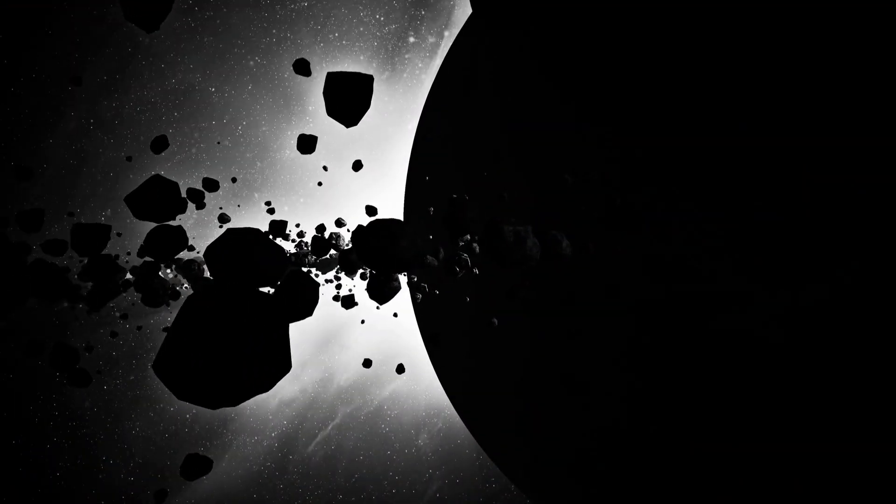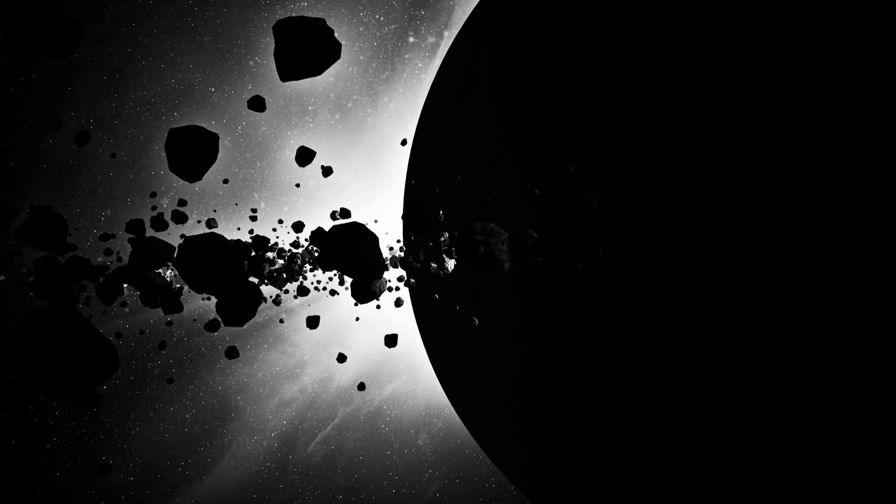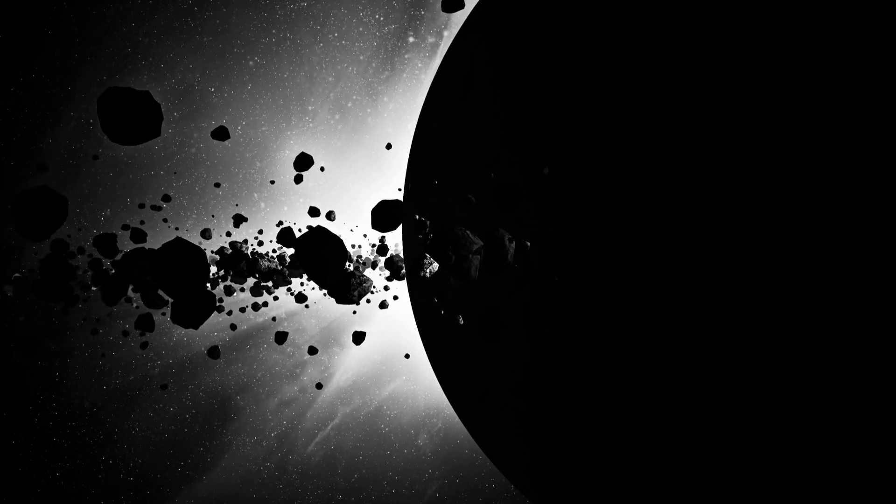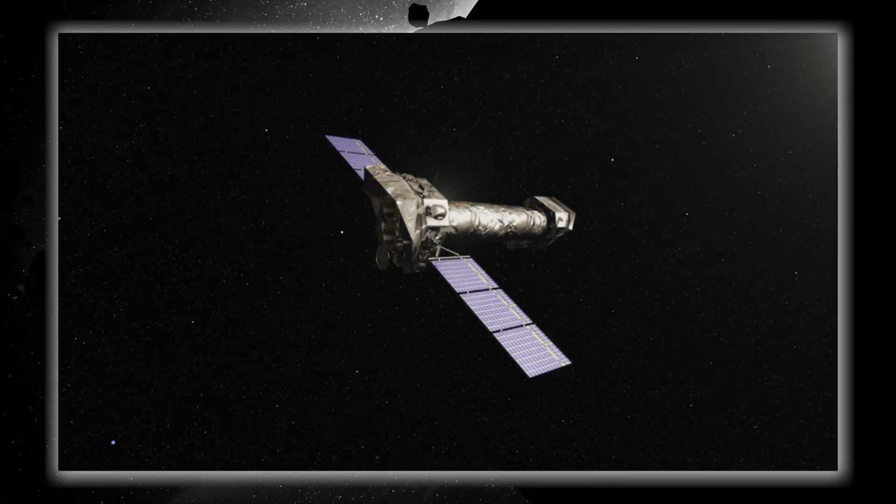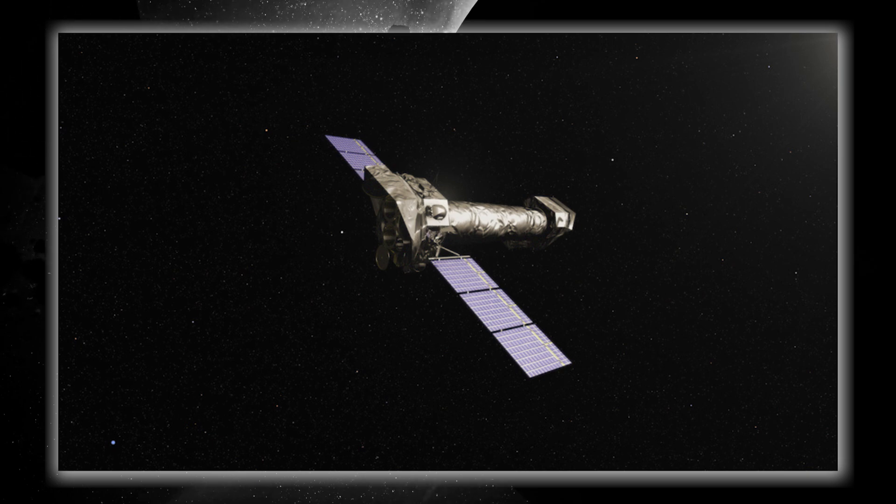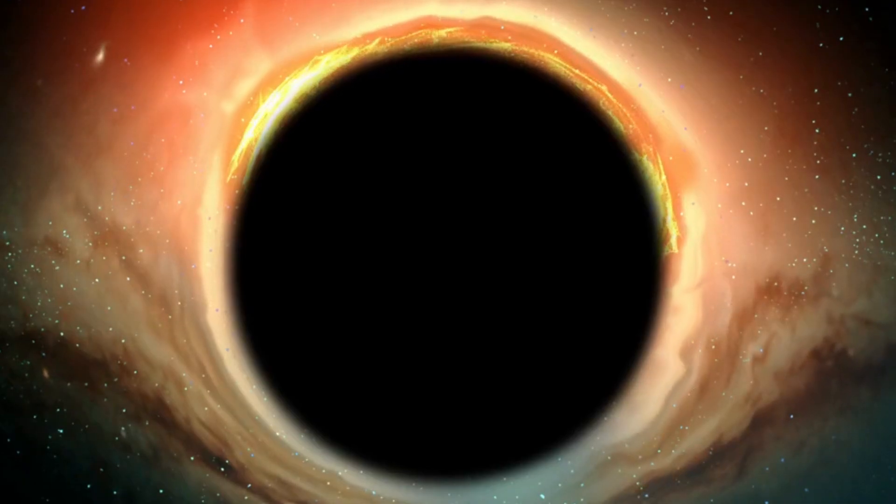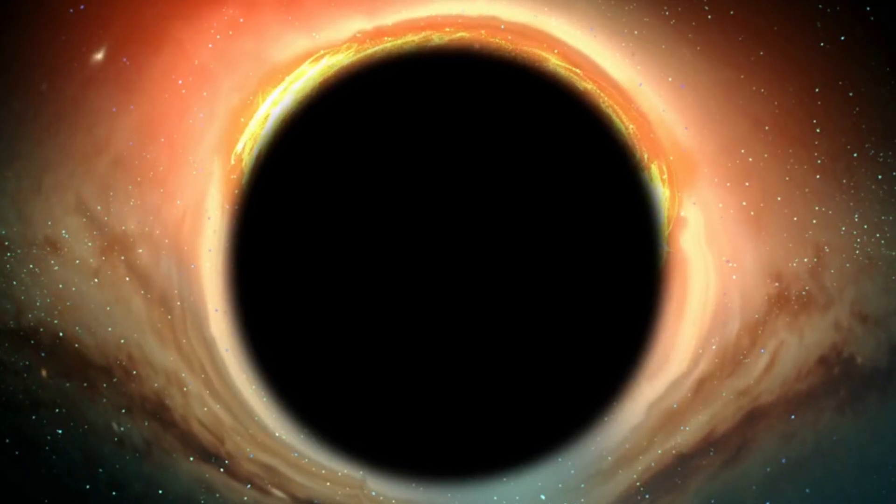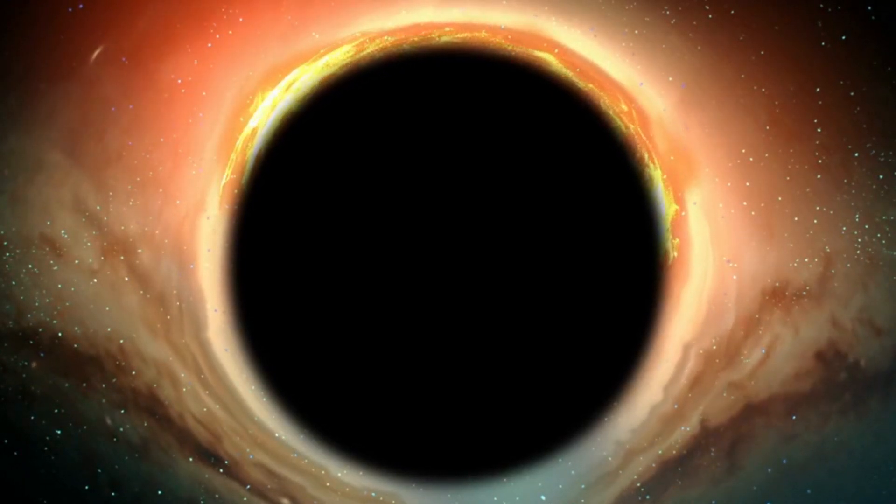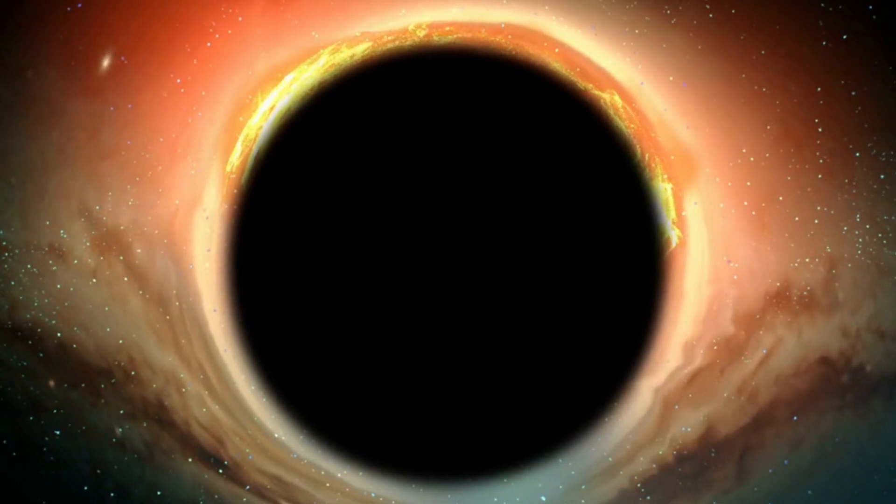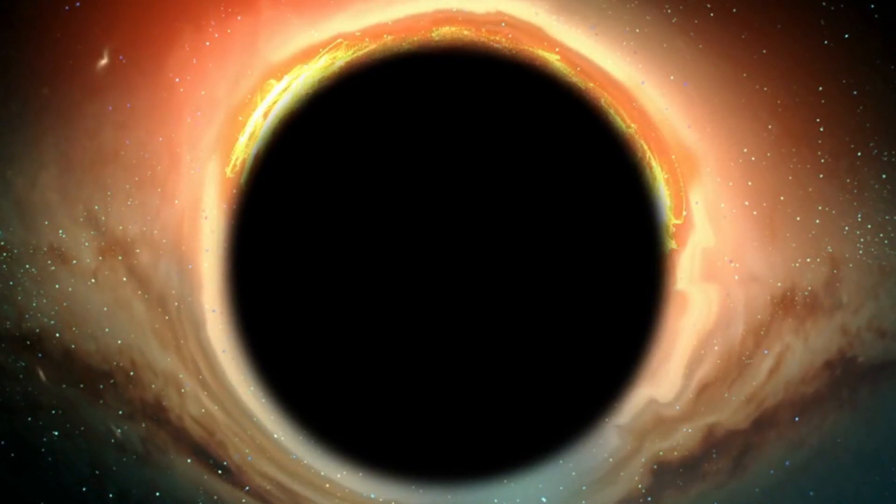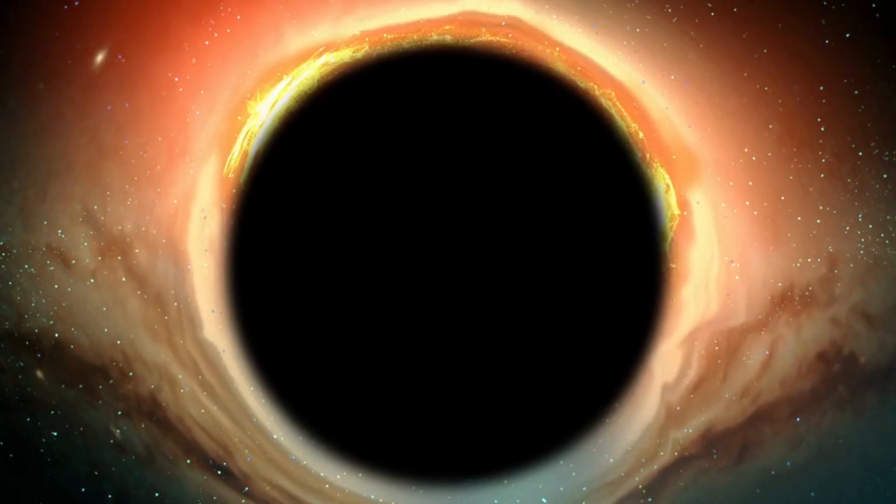But how did this revolutionary discovery come about? The story centers on two impressive space telescopes, the XMM-Newton operated by the European Space Agency, the James Webb Telescope, and NuSTAR operated by NASA. These telescopes were focused on a supermassive black hole and witnessed quite a show over several days. They observed fascinating X-ray flares emitted by the scorching hot corona surrounding the black hole.